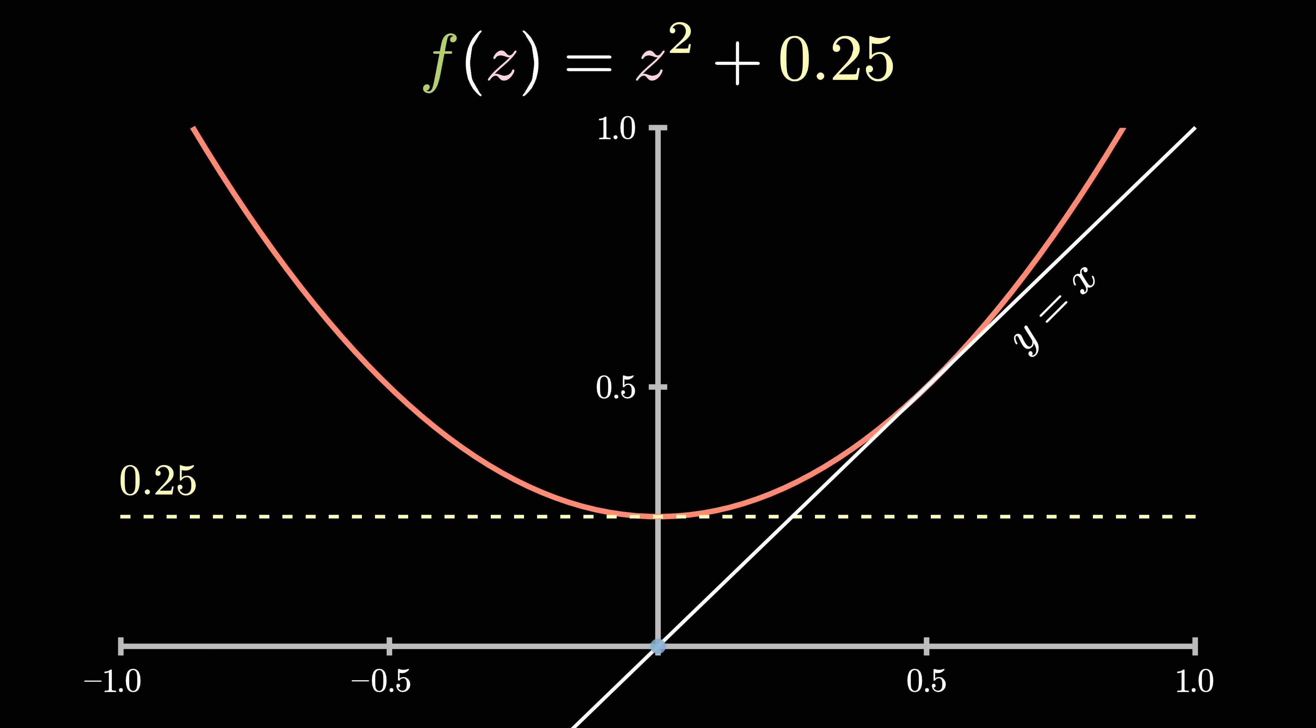Well, let's start at the origin, represented by this blue dot here. Then we can calculate f(0), setting the y coordinate of the dot to f(0). This has the same effect visually as moving up until we hit the parabola.